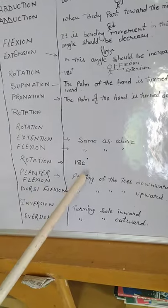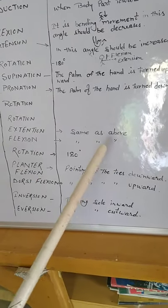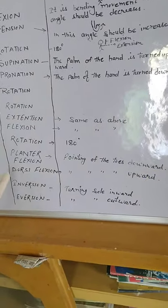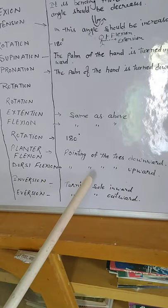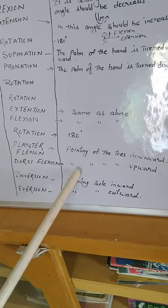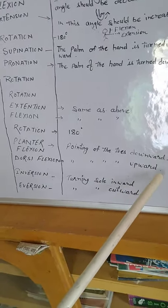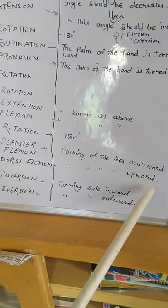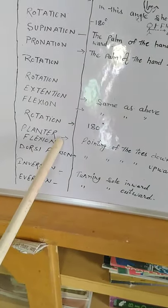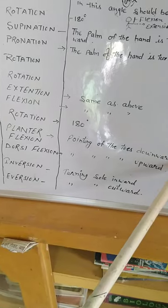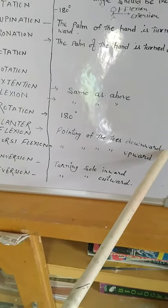Now I will explain plantar flexion. Plantar means pointing of the toes downward. Dorsiflexion means opposite of the plantar flexion, means pointing of the toes upward where angle should be decreased. In plantar flexion, angle should be increased. You will mention here this thing also.